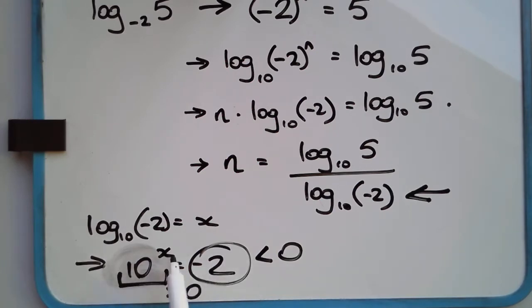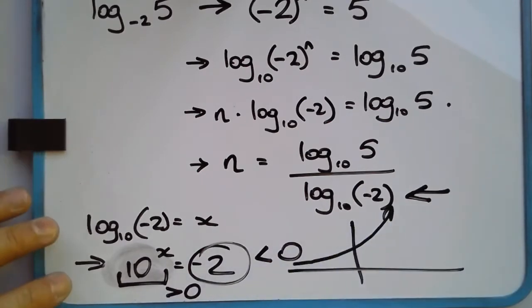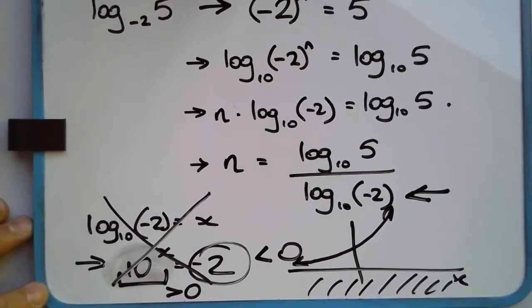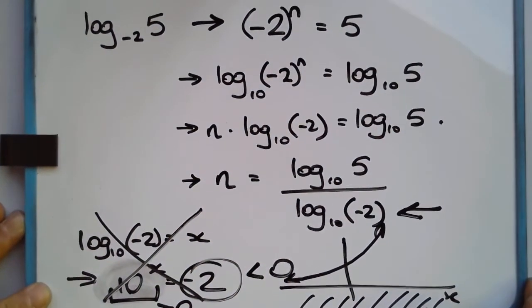In fact, when we look at the graph of 10 to the power of x, the graph of 10 to the power of x is like this, that's an exponential. There's nothing below the x-axis there. So this fails. That cannot work. So therefore, we cannot find an n such that negative 2 to the power of n equals 5, and that's why we limit the base of a logarithm when we're dealing with logarithms.